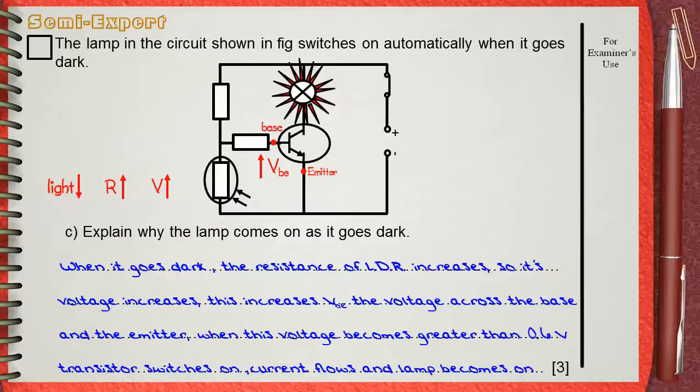When this voltage becomes greater than 0.6 volts, the transistor switches on, current flows, and lamp becomes on.